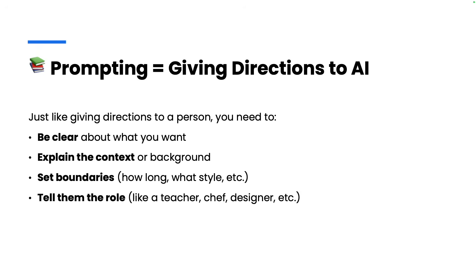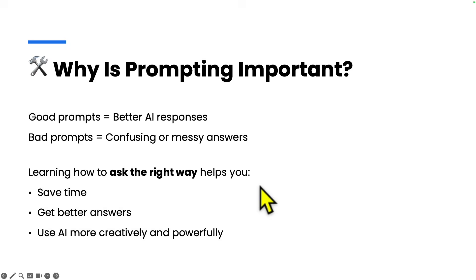So what is prompting? Prompting is where you give directions to generative AI, just like how you give directions to a person. To get better results, you can be very clear about what you want, provide enough context or background information, and set boundaries and constraints. These boundaries could include the style or format of the output, how long you want it to be, and you can supplement it with a role — like telling the AI you are a chef, or that you want to explain something to a teenager.